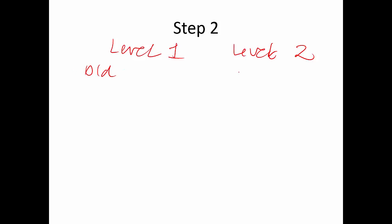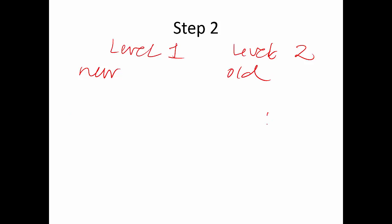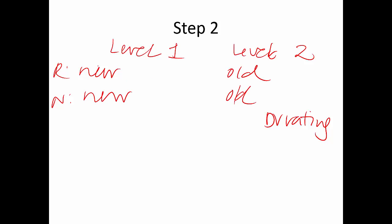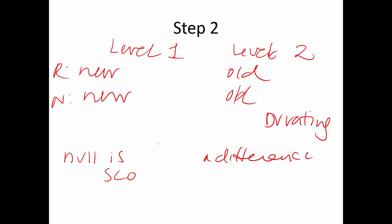I put new first and old second. The DV is my ratings. You can put them in any order you want — this part doesn't matter for the math, because what we're actually doing is comparing if the difference between these levels is different from zero. The null is: is the difference score equal to zero? It's really taking new minus old and testing that against zero.